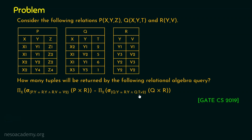After performing the Cartesian product, there is a selection with a condition. Once we do this, we need to project only the column x. So we will have left-hand side and right-hand side results, and finally we do the set difference operation which is minus. We need to find out how many tuples will be returned by this query. This question was asked in GATE Computer Science in the year 2019.